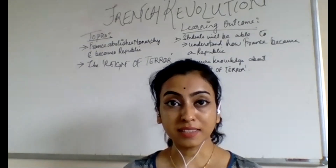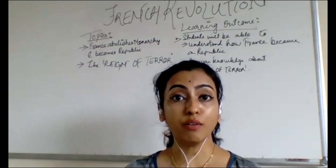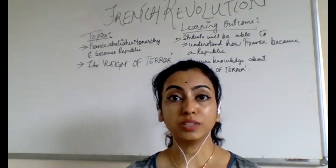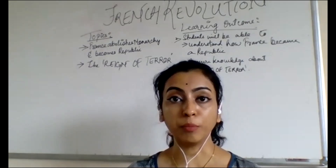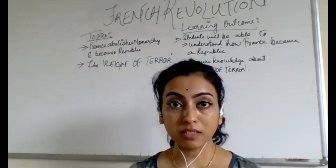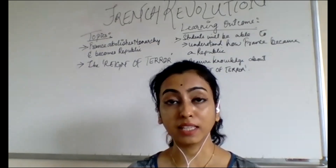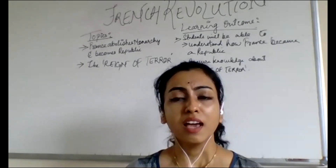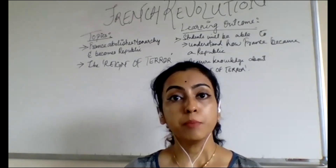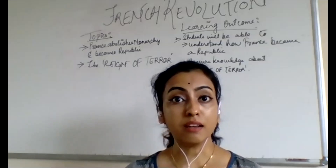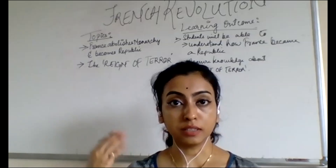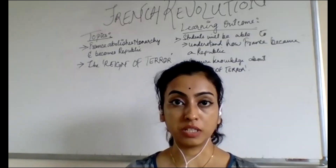In our last class we talked about how France became a constitutional monarchy, how the National Assembly was formed and how they demanded a constitution for France. The king had to accept their demands, and after the drafting of the Constitution, people were given rights in France.